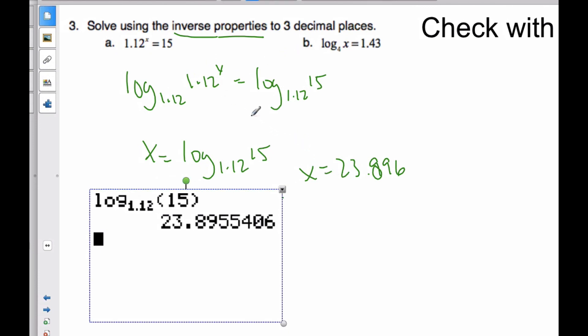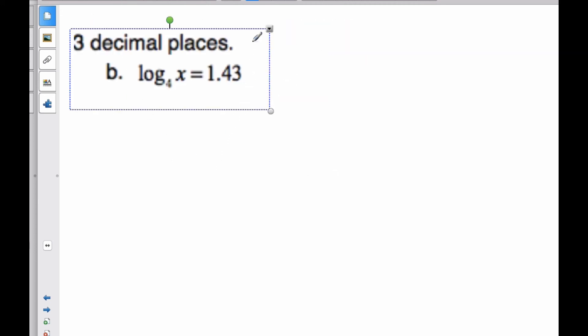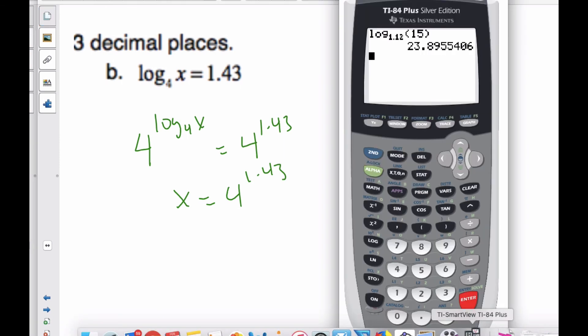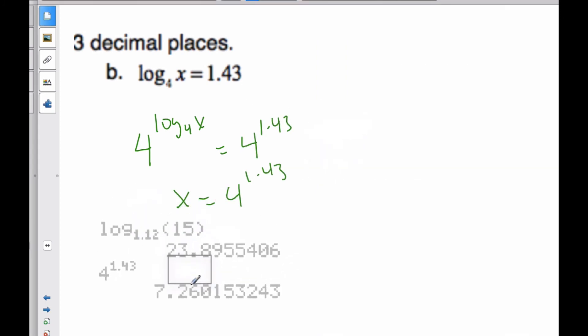Okay, so now solving this b part. If I want to solve b now. Well, I have a base 4 here. I have to use the inverse property because it told me I had to. So I'm going to take 4 and put this in the exponent. If I do it to one side, I must do it to the other side. These are inverses, so they cancel. So x is equal to 4 to 1.43. Using my calculator, if I go 4 to the power of 1.43, I can see my answer is 7.26.